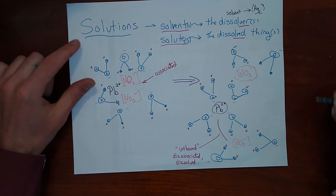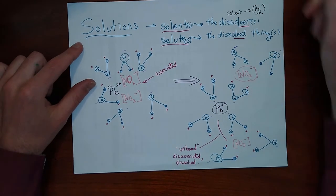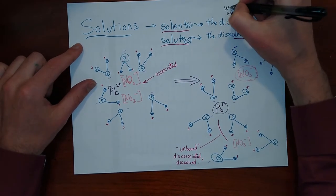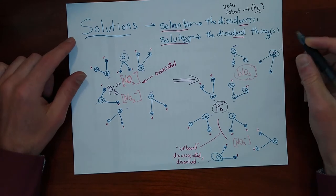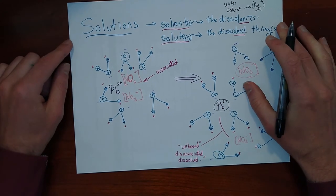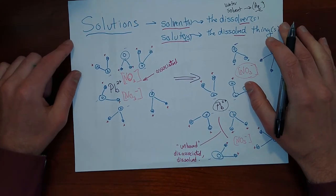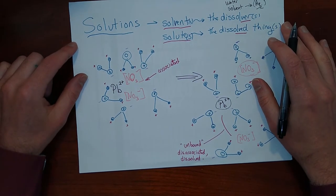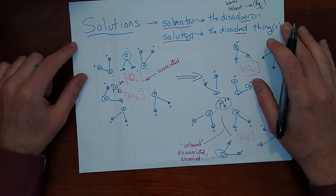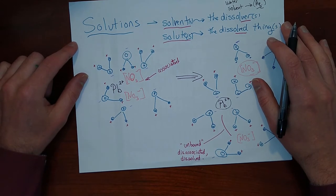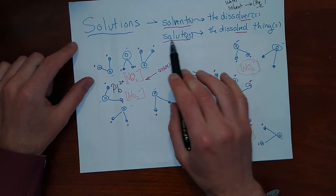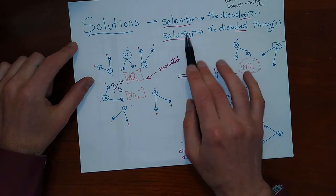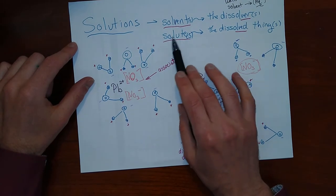We have the symbol 'aq' for aqueous solution, which means water. Water is the universal solvent — it is one of the most common and one of the best solvents that exists. But there are other types of solvents for other types of compounds, and many acids can also act as solvents. The solutes are the things that are put into the solvent and dissolved by it.